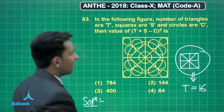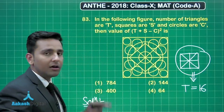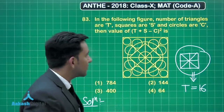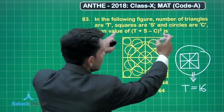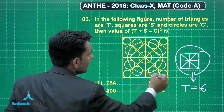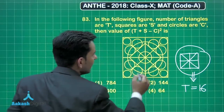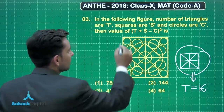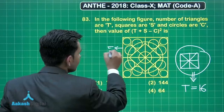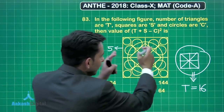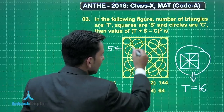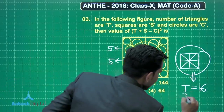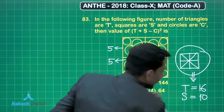So we have total 16 triangles in the given figure. Now let's count the number of squares. You can see that if you take the outermost square, the midpoints are joined, so we are getting 4 squares. Including the outer one, we have total 5 squares in the outermost structure. When we consider the inner square, again the midpoints are joined, and we again obtain 5 squares. So the number of squares in the given figure is equal to 10.